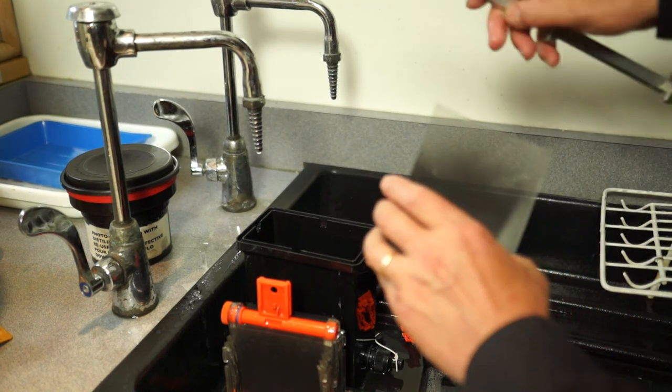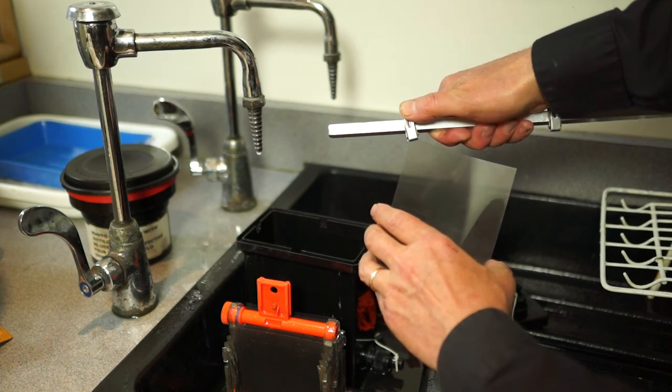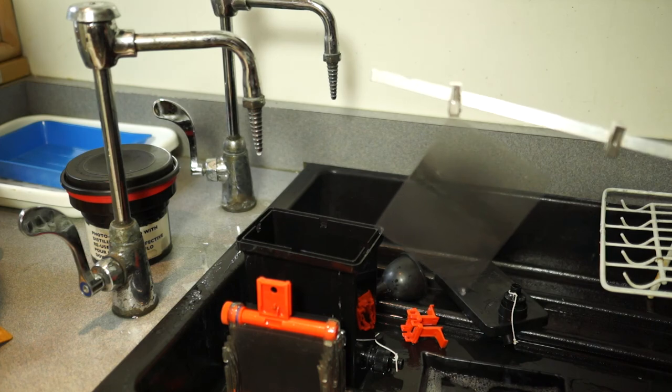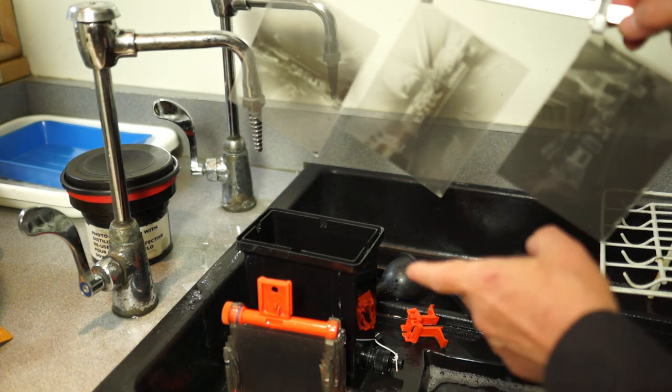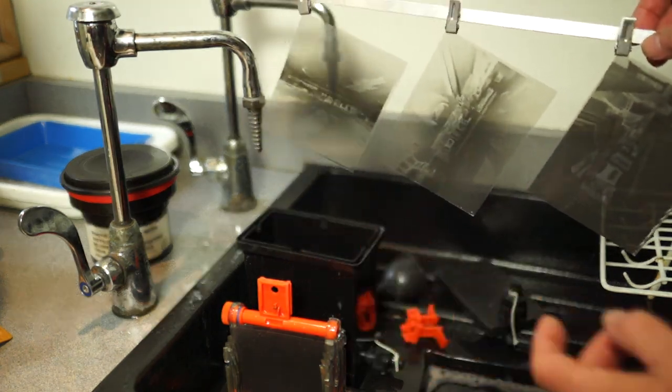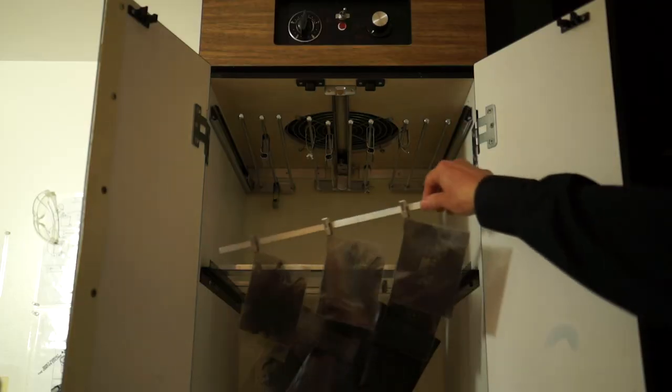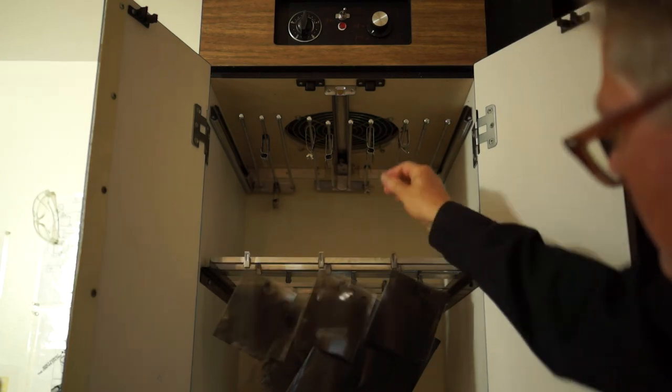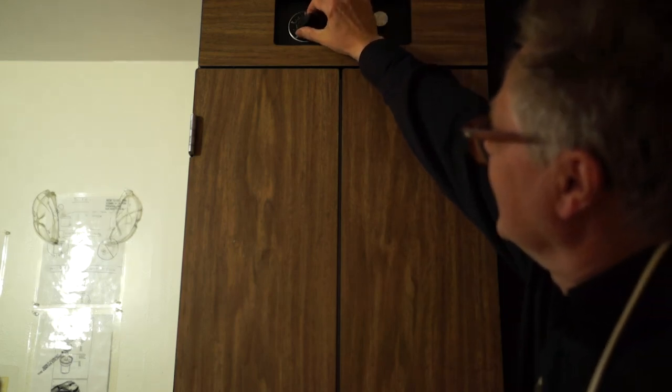To dry the sheet film, we'll use the same drying cabinet that we used for the roll film. We'll just clip it onto one of these bars and then place this bar in the cabinet. Here I have the three sheets of film on the bar, and that just gets placed in the cabinet now. Set this for about a half hour.